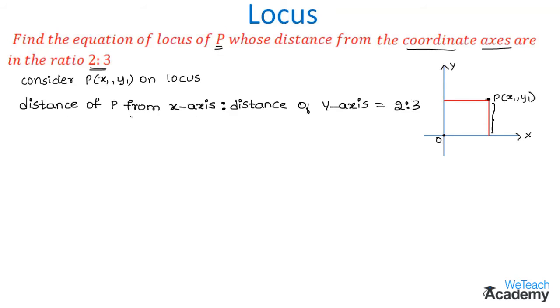We already know that the distance of P from the x-axis is given by the formula |y1|, whereas this distance is given by the formula |x1|. So that implies we get |y1|:|x1| = 2:3.